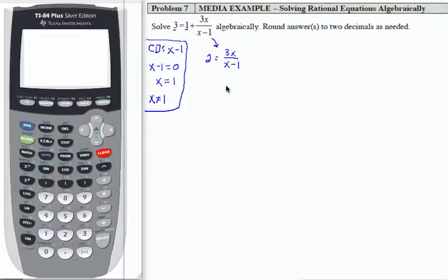So I'm now going to multiply both sides of the equation by the common denominator. That common denominator is x minus 1. So that gives me 2 times x minus 1 equals 3x over x minus 1 times x minus 1. And sometimes it helps to put these in parentheses like that. Now what I see is on the right hand side, my denominator cancels with this piece that I'm multiplying here. So what I'm left with is 2 times the quantity x minus 1 equals 3x.